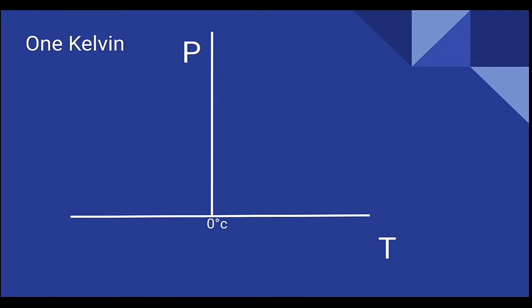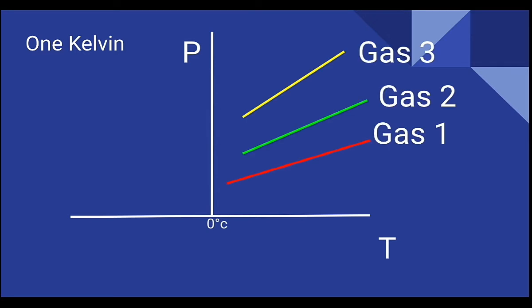Let us consider a pressure versus temperature graph. In this graph, different gases—Gas 1, Gas 2, Gas 3—show the relation between pressure and temperature. From this graph, if we decrease the temperature, the pressure will also decrease.